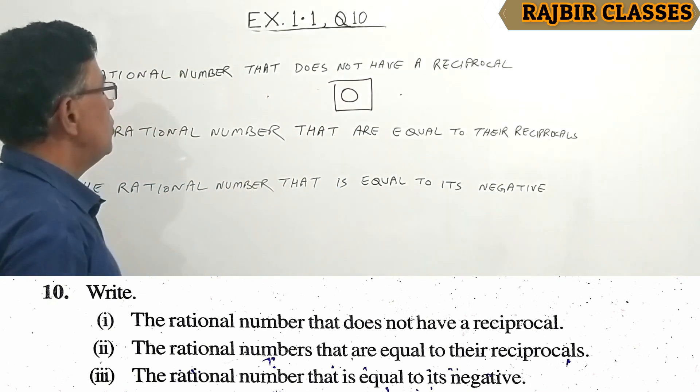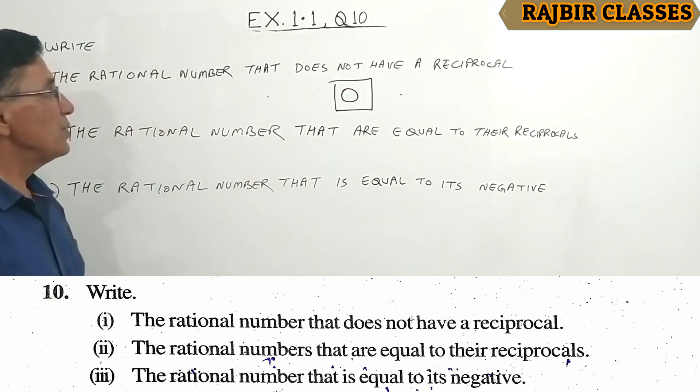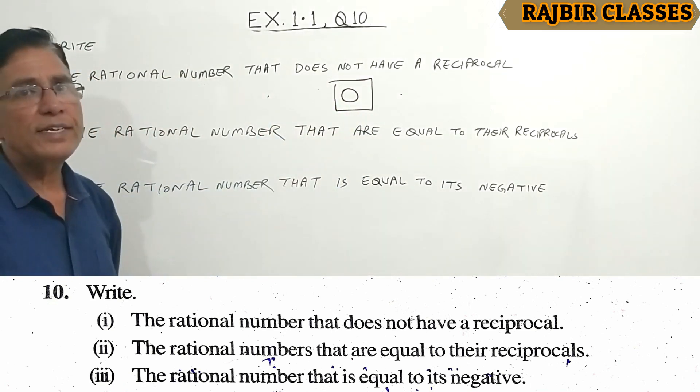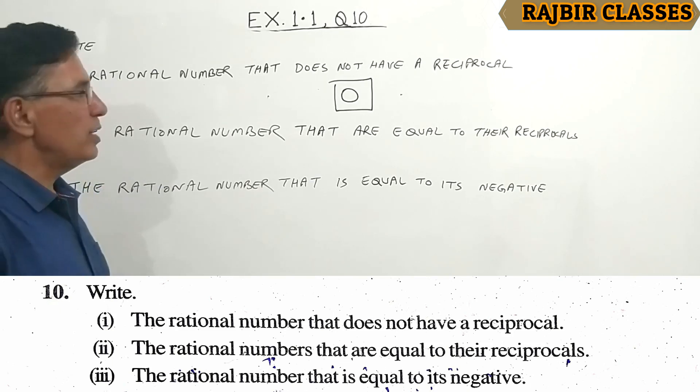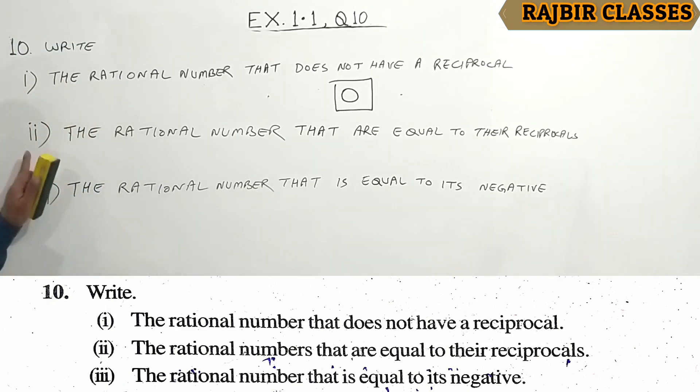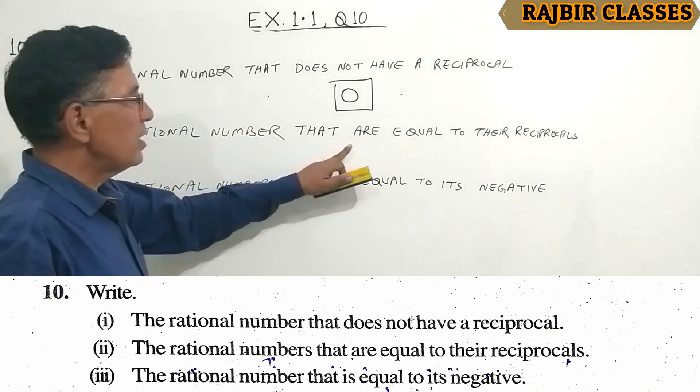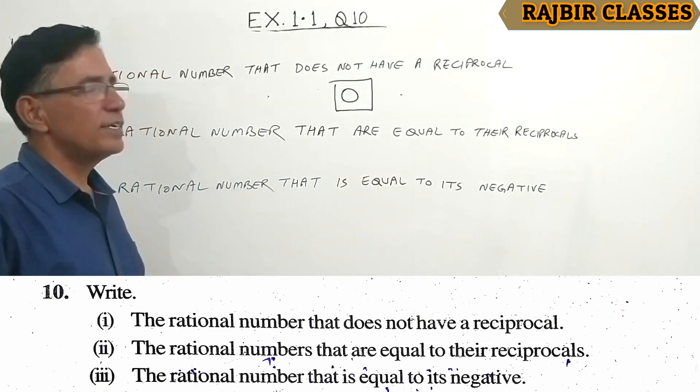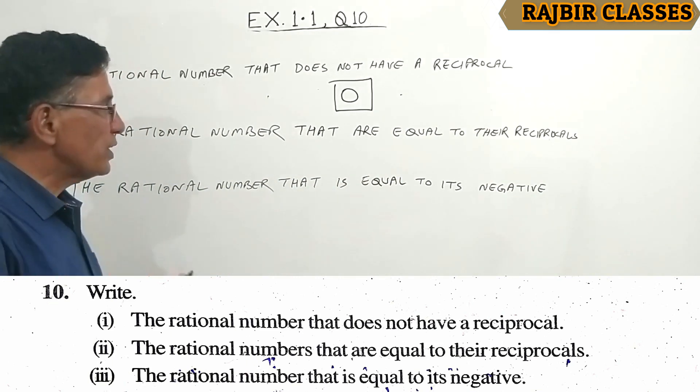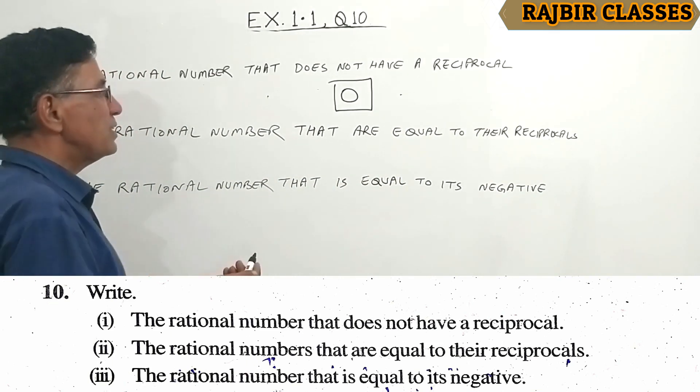So 0 is the rational number that does not have a reciprocal. Second question: the rational numbers that are equal to their reciprocals.